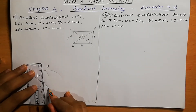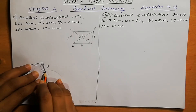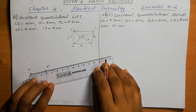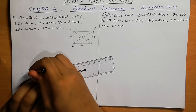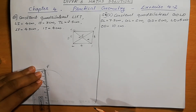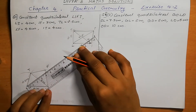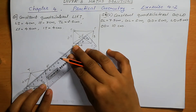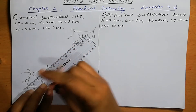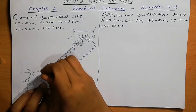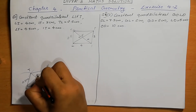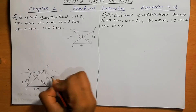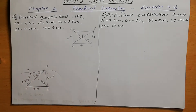Now we can join LF, and we can join TF as well. IF is 3 cm and LF is 4.5 cm. This is our required figure LIFT.